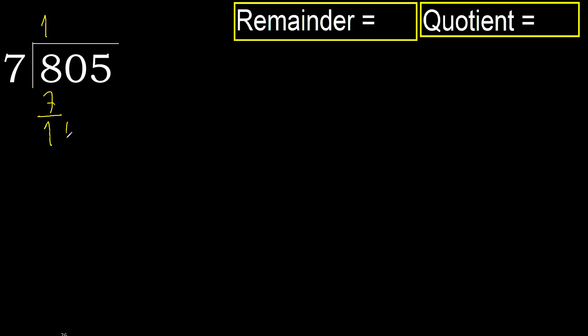Next, bring down: 10. 7 multiplied by 2 is greater. 7 multiplied by 1 is 7, which is not greater. OK, subtract.